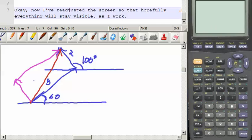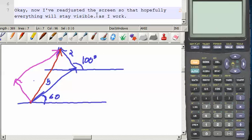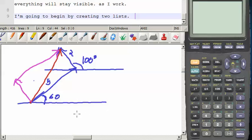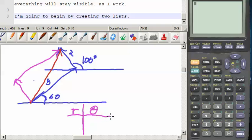Okay, now I've readjusted the screen so hopefully everything will stay visible as I work. I'm going to begin by creating two lists. These lists will be r and theta, and r the r values will be 5 and 2, and the theta values will be 60 and 100.